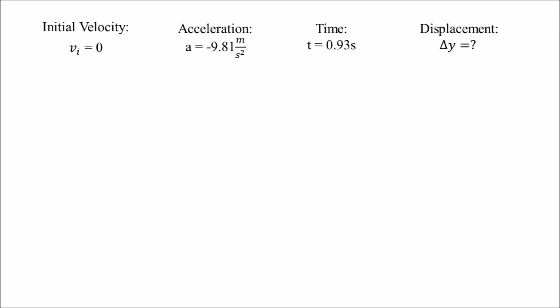Using these three variables, we can solve for the height of the fall using this equation. Change in displacement equals v initial times time plus one half acceleration times time squared.